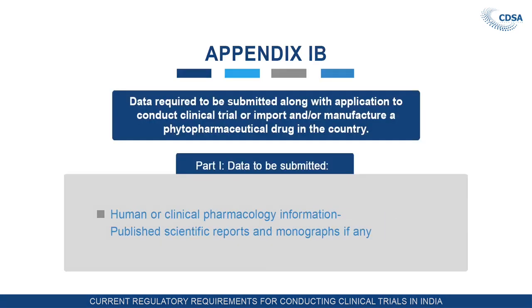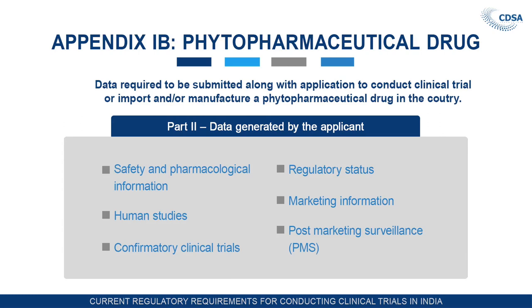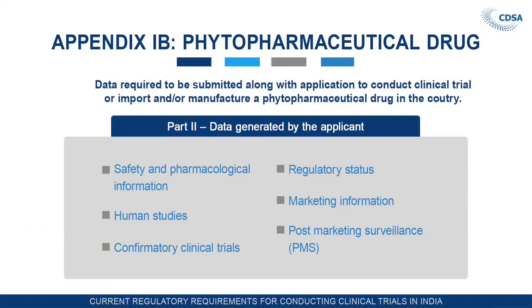Part 1 also includes human or clinical pharmacological information, published scientific reports, and monographs if available. Part 2 consists of data generated by the applicant, including identification of the plant, authentication and source of plant used for extraction and fractionation, process of extraction and subsequent fractionation and purification, formulation of the phytopharmaceutical drug applied for, manufacturing process, stability data, safety and pharmacological information, human studies, confirmatory clinical trial, regulatory status, marketing information, and post-marketing surveillance report if any.